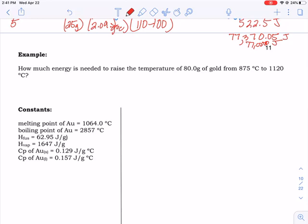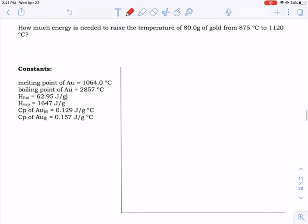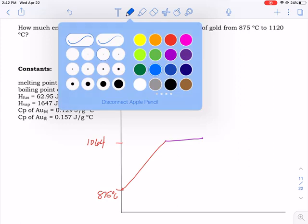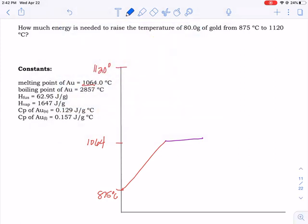The next one. How much energy is needed to raise the temperature of 80 grams of gold from 875 to 1120 degrees? Now, we're going to start with gold at 875. Is it going to be a solid liquid or gas? Gold melts at 1064. That's higher than 875. So we're going to start with him as a solid, and he's going to heat up until he begins to melt. So there's our first line. After he reaches 1064, he's going to be able to melt. After he has completely melted, then he's got the ability to heat up again. And is he going to make it to 1120? Yes, because 1120 is lower than 2857. So we're going to go all the way up to 1120.